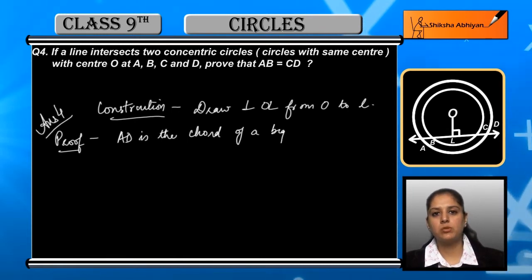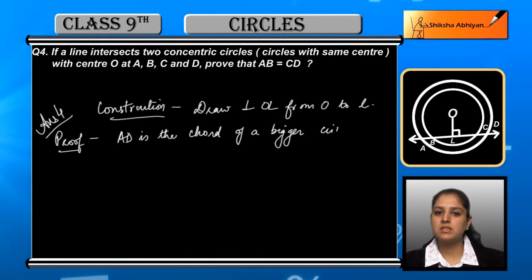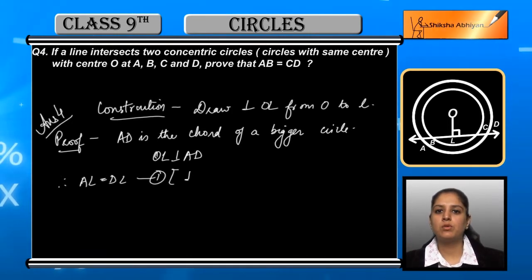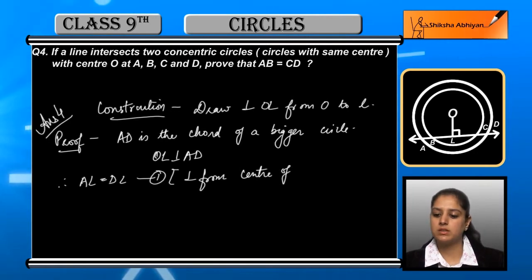We can say that OL is perpendicular to AD, and we can say that AL is equal to DL. This is equation number 1. The reason behind this is that any perpendicular drawn from the center of the circle to any chord bisects that chord into equal parts.